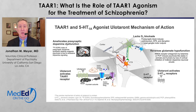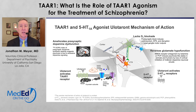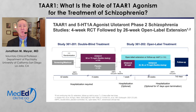The one compound furthest along in clinical development is ulotaront, which is a TAAR1 agonist that also has some serotonin 1A properties. The serotonin 1A activity is not what makes this drug an antipsychotic — it's the TAAR1 agonism — but it may help with other aspects of the molecule. Most importantly, it does not have D2 blockade. It seems to, in preclinical models, do all the things we want from an antipsychotic but without motoric adverse effects.